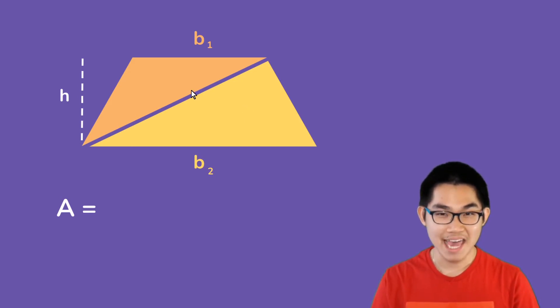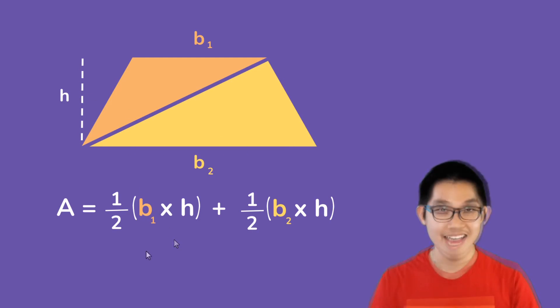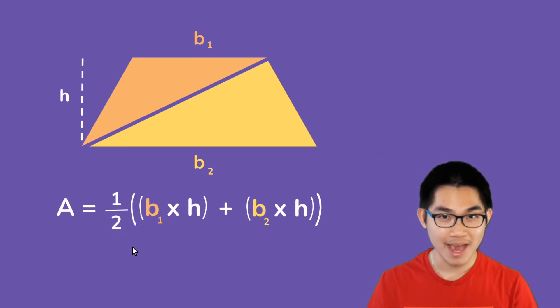So, what is the area of the orange triangle? Well, if you watch one of my videos, you will know that the area is 1/2 times this base times the height. And the area of the yellow triangle is also 1/2 times the second base and then times the height. Now, if you look at both of these expressions, you can see that they both have the 1 over 2. So, we need to factor them out.